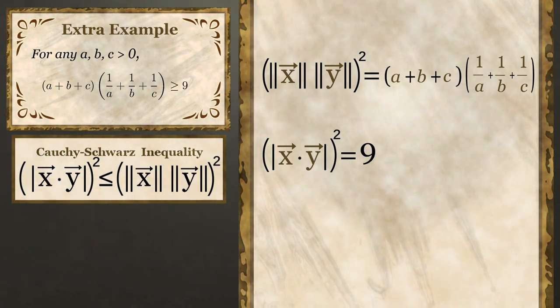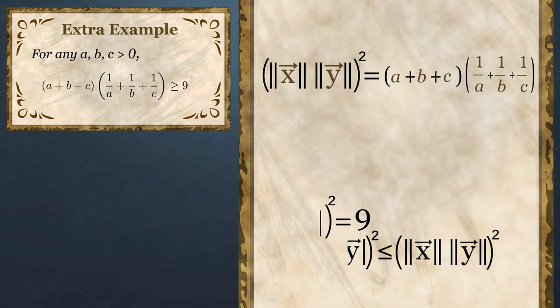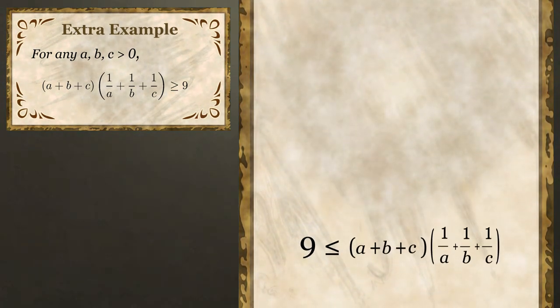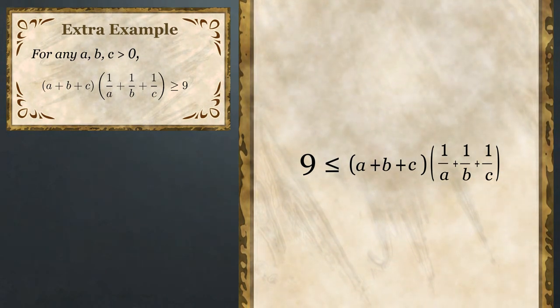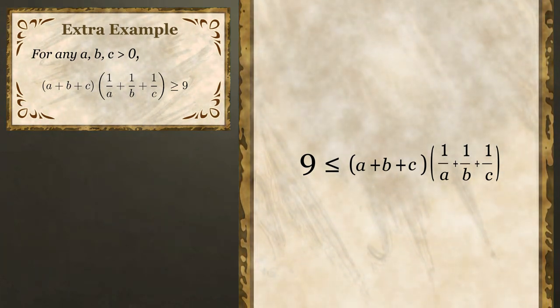Therefore, by the square of Cauchy-Schwartz, 9 is less than or equal to a plus b plus c times 1 over a plus 1 over b plus 1 over c.